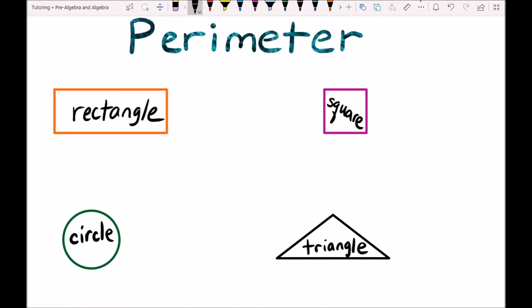The perimeter is the length that you would get if you were to take a tape measure and measure this side and then go around to this side and keep going on this side and measure all four sides with a tape measure or a ruler and add up the different lengths you get.